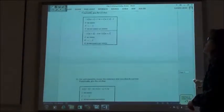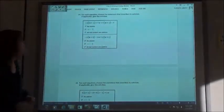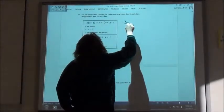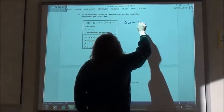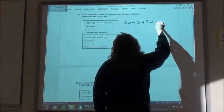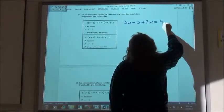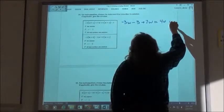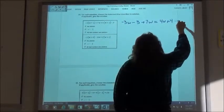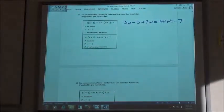So number 14. Same thing. Got to get rid of our parentheses. So if we do the top one. Negative 3w minus 3 plus 7w equals 4w plus 4 minus 7. Looks good.